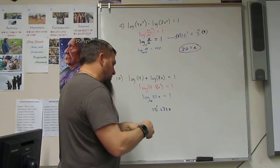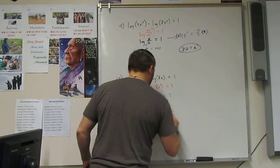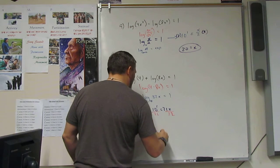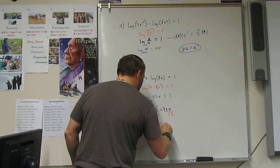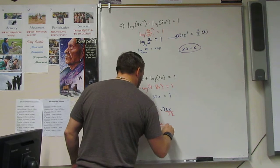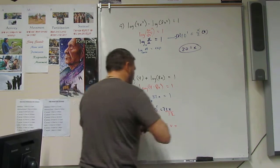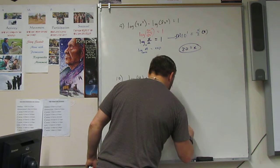So I solve by dividing. So I get 10 over 32 is equal to x, or x is equal to 5 sixteenths.